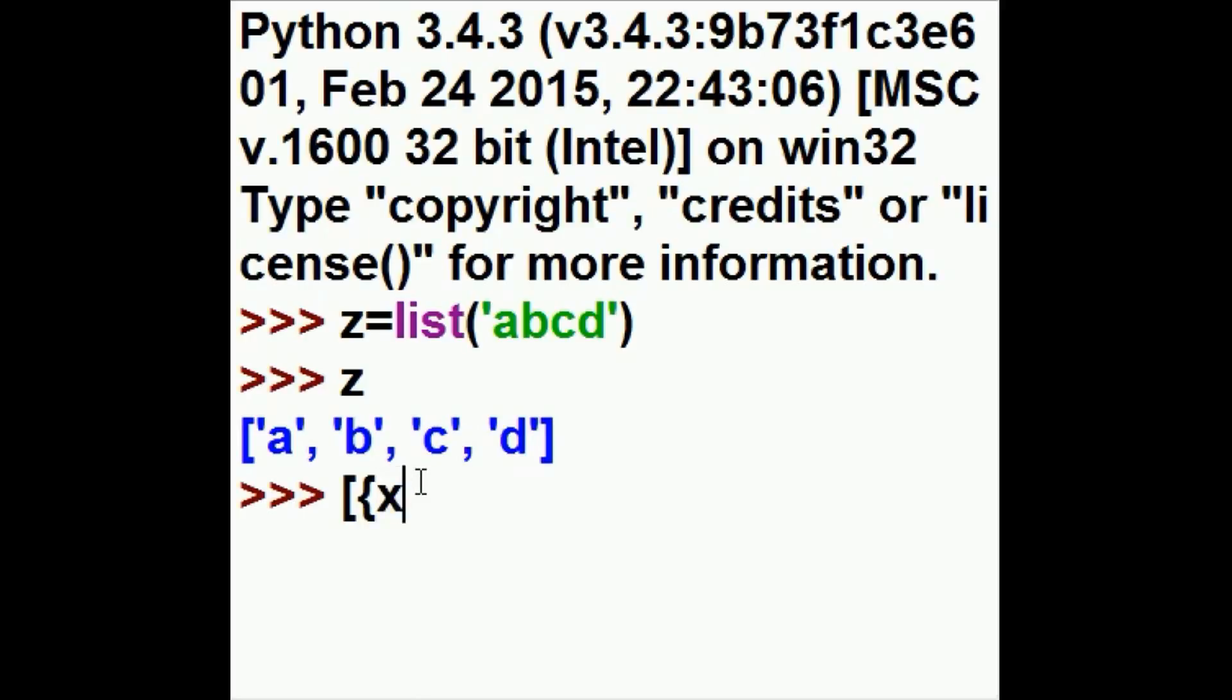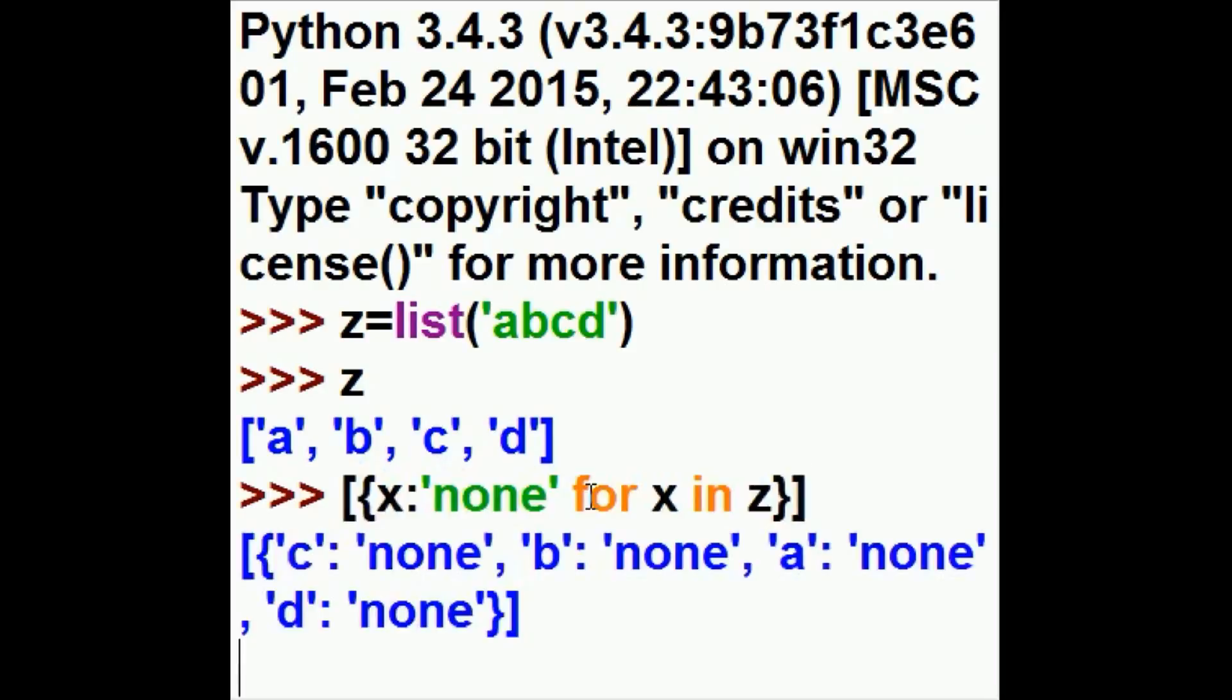I want to see whatever is in X, and I also want to see the word 'none'. And I want that to happen for every X as it walks through Z. So I stipulate that this way: for every X in Z. Close the curlies. Close the squares. Hit enter. And there we go.